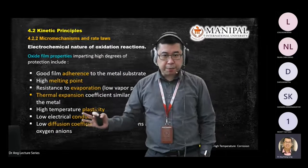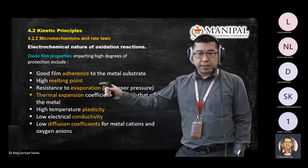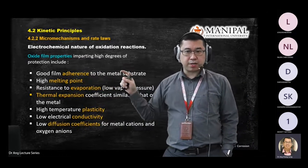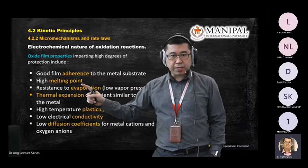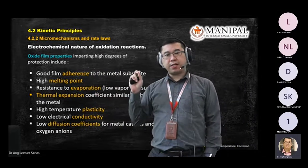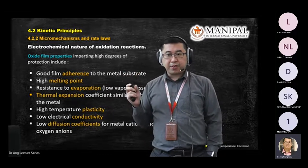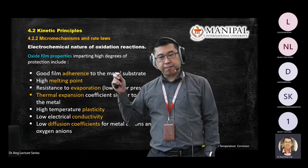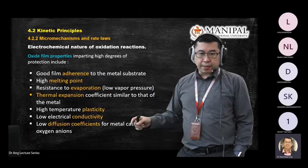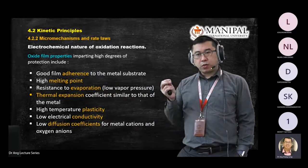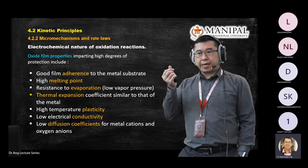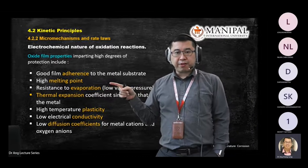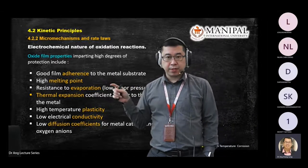These are the properties for oxide film. They stick to the surface — oxide films are good at adhering to the metal surface. They have a high melting point. You can imagine oxide as something like carbon — you can burn and melt it at a very high temperature. This is about their evaporation. Carbon is a very stubborn element because it melts at a very high temperature, and they also have very stable chemical properties.